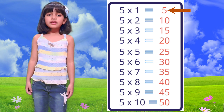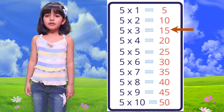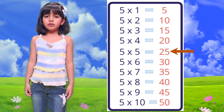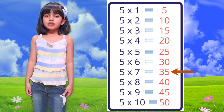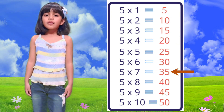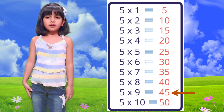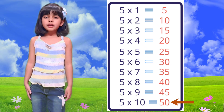Table of 5. 5 1 is 5, 5 2 is 10, 5 3 is 15, 5 4 is 20, 5 5 is 25, 5 6 is 30, 5 7 is 35, 5 8 is 40, 5 9 is 45, 5 10 is 50.